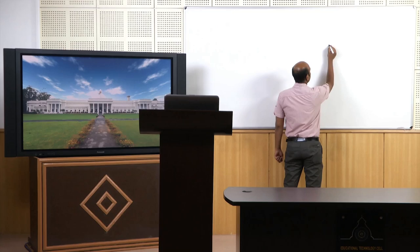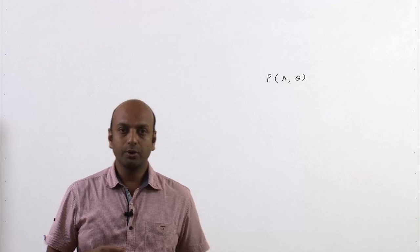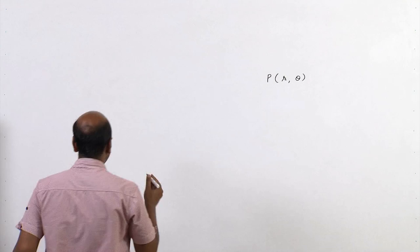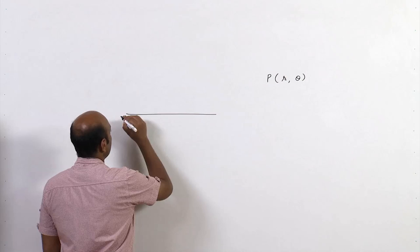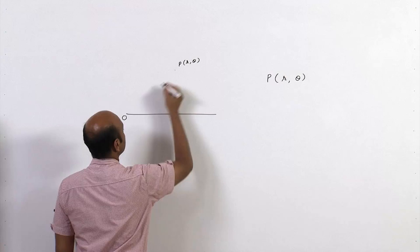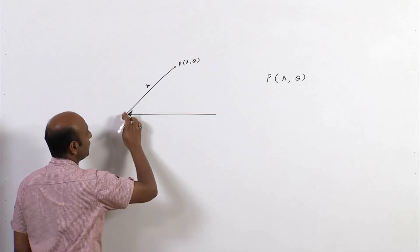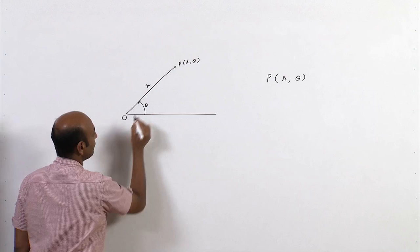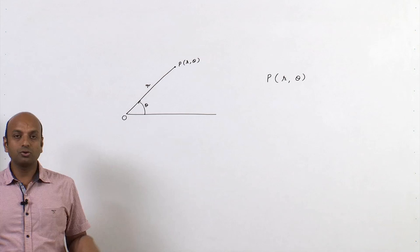In a polar curve, we denote a point by (R, θ). In a Cartesian curve we use (x, y); in a polar curve we use (R, θ). First, fix a point O called the pole. Then take an initial line. If the point is (R, θ), then the length OP is R, and θ is the angle which the line segment OP makes with the initial line.